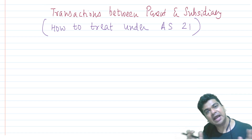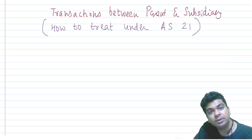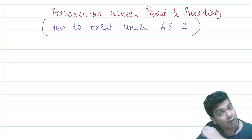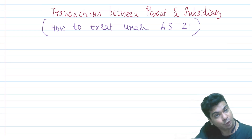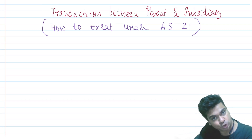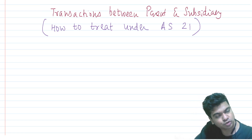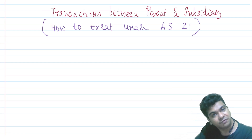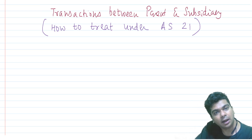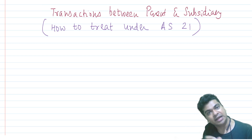We will consider as if this transaction had never taken place. However, it is quite possible that certain goods remain unsold and are lying in inventory. In that inventory there can be profit — or even a loss — but there can be a profit. This profit will turn out to be unrealized profit, and this unrealized profit has to be eliminated.